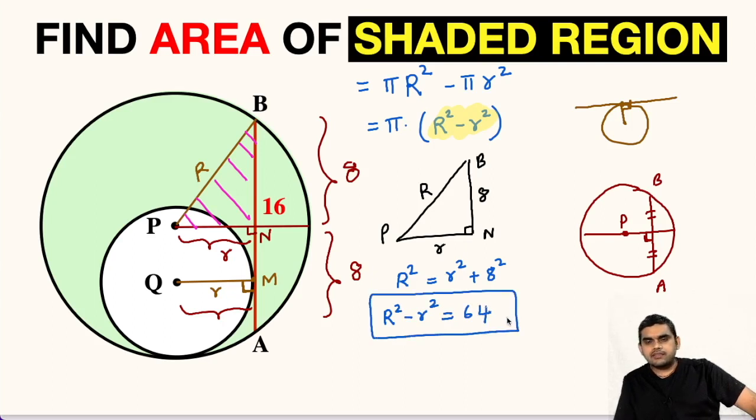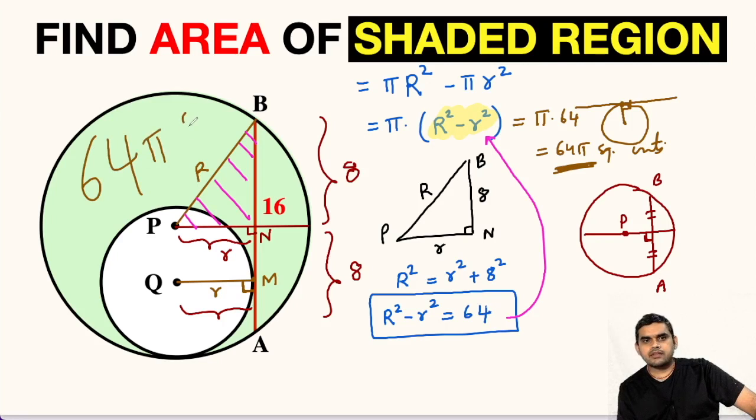After getting this value, we can substitute it here. So the area of this shaded region will be equal to pi times 64 or 64 pi square units. If you want, you can substitute the value of pi as 3.14 and get the answer in decimals. But I am leaving it till here. So the area of this shaded region is 64 pi square units.